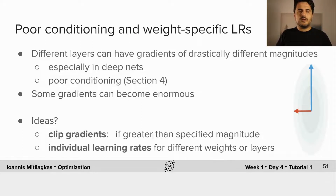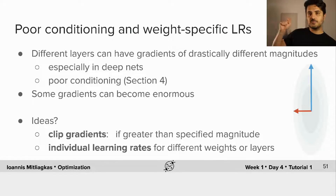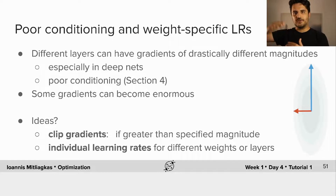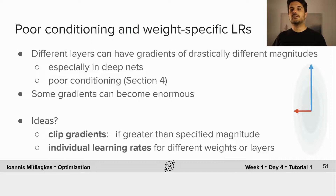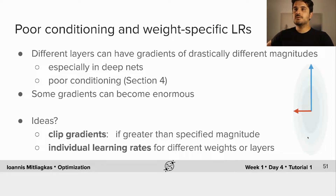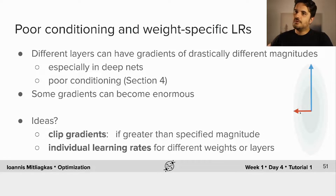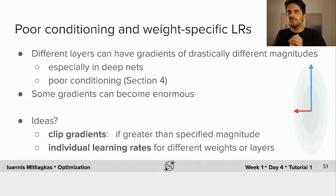There are a couple of ideas to deal with this. One classic one is gradient clipping — we use the same learning rate, but if the gradients become too big, we multiply them by a number smaller than one until they go below a threshold. Another idea, which is way more common, is to use individual learning rates for different weights or layers. If along weight W1 I see a flat direction and along W2 I see a sharp direction, I can recondition by using different learning rates for different directions.